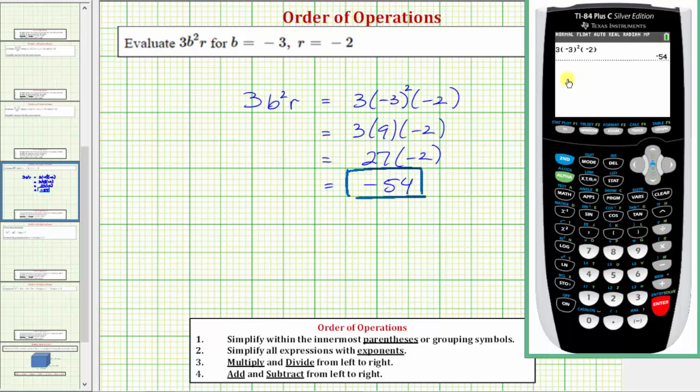Enter. The calculator gives us negative 54, verifying our work is correct.